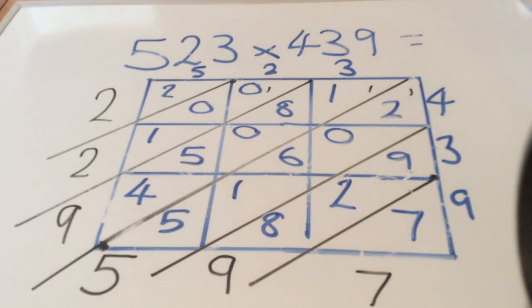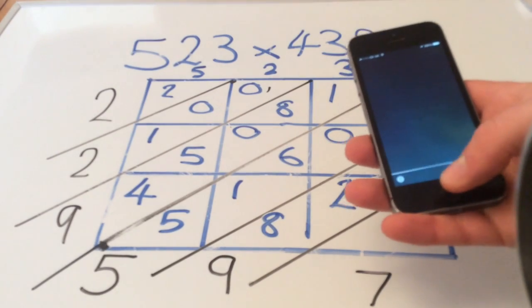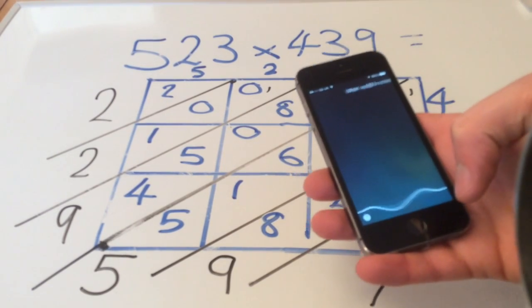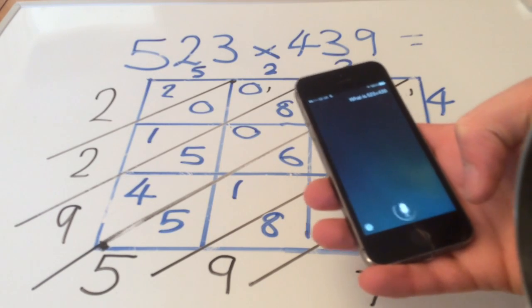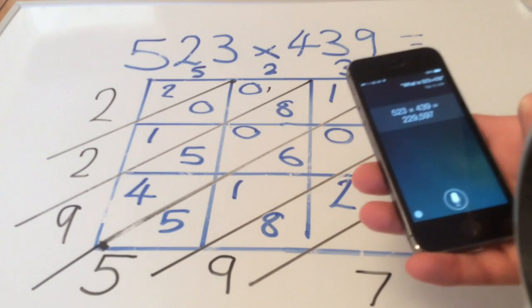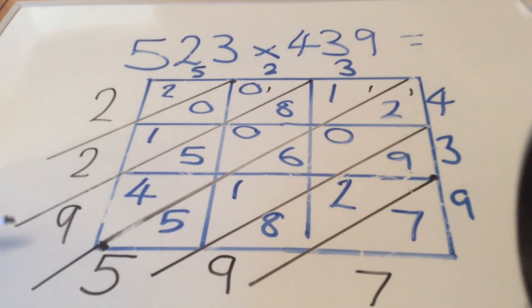So check our answer again. What is 523 multiplied by 439? 229,597. And we have 229,597.